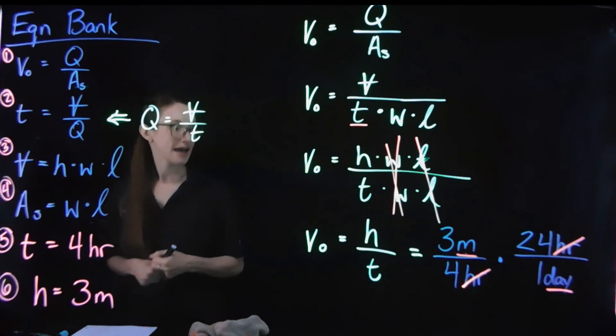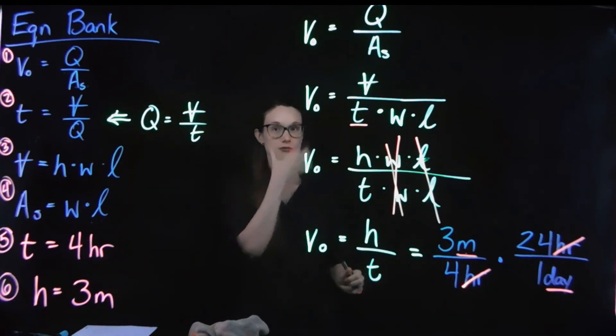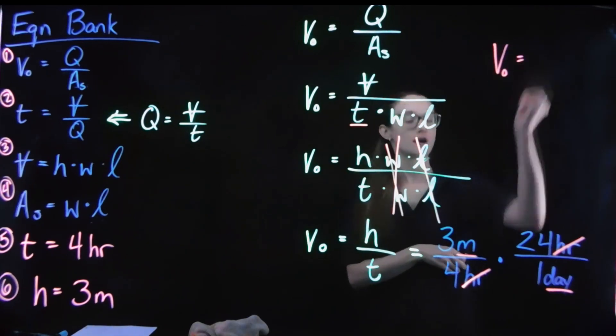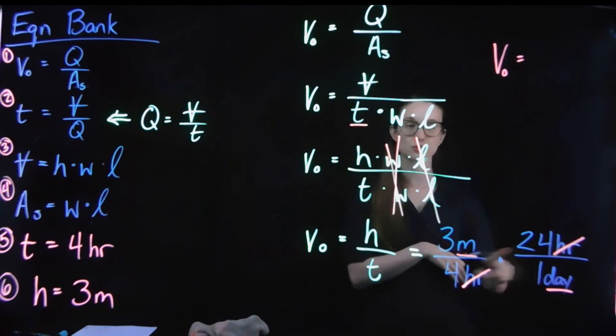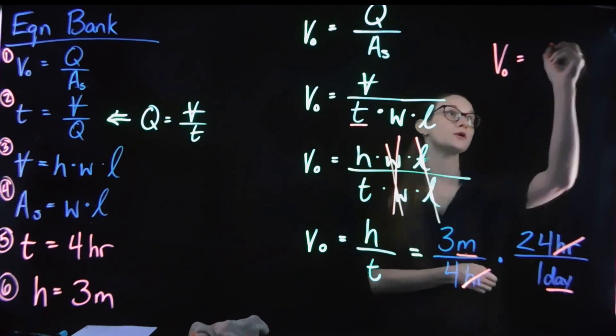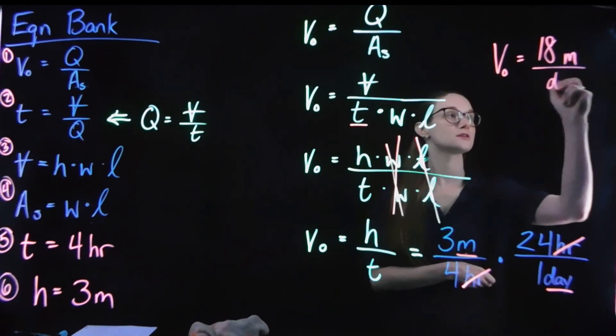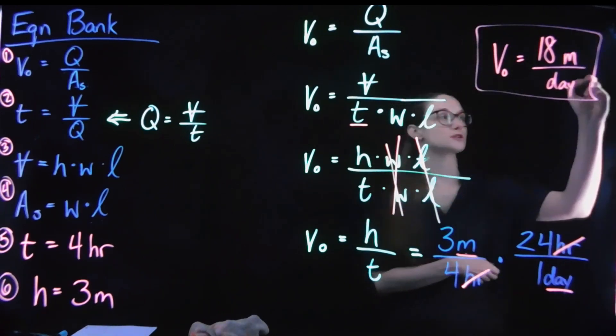So this allows me once again to cancel some stuff out, my units of hours and hours disappear, leaving me my meters per day. So in the end, when I plug all this through right up here, my final overflow velocity, 3 times 24 divided by 4 ends up being 18 meters per day as my final answer.